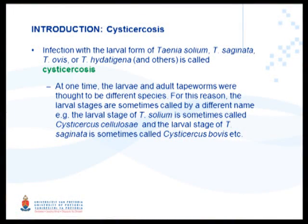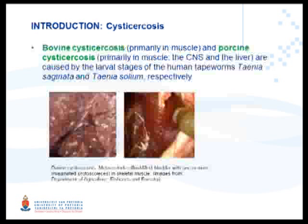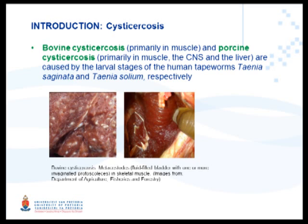Cysticercosis - the most important parasites from a veterinary science and human perspective are Taenia solium, Taenia saginata, hydatigena, and ovis. Bovine cysticercosis is caused by Taenia saginata, where the adult tapeworm occurs in human beings and the intermediate stage, the cysticercosis, occurs in cattle. The one of most interest to us in this workshop is Taenia solium, porcine cysticercosis, where humans also carry the tapeworm.